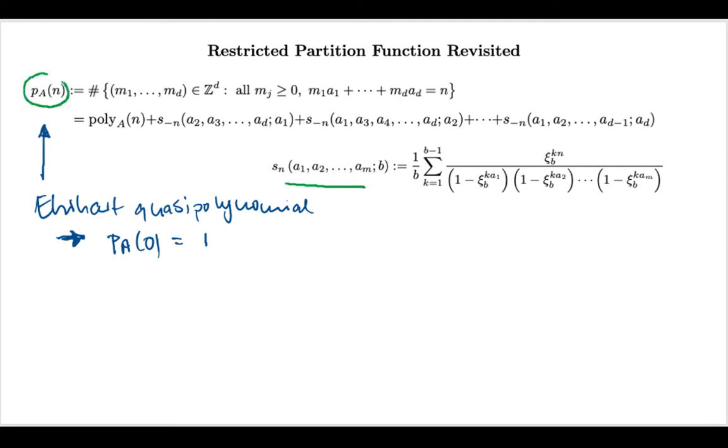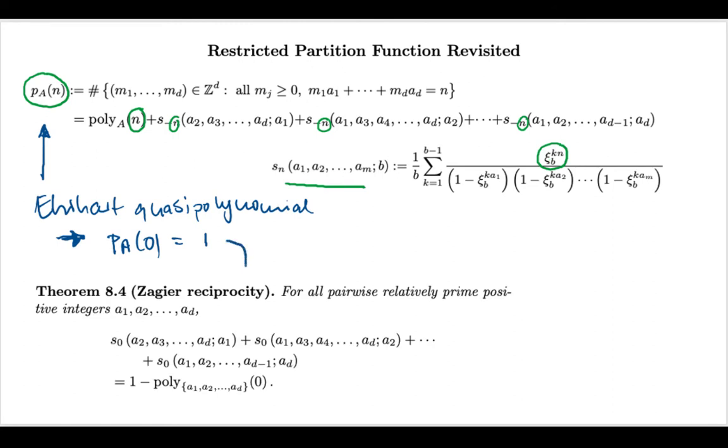that gets me a left-hand side of 1. I can plug in n equals 0 into the sort of polynomial part. That gives me some rational expression. And then if I plug in n equals 0 into these Fourier-Dedekind sums, we will get sort of a trivial numerator up here. Still, these are special cases of Fourier-Dedekind sums. And so we have a relation now from the fact that the restricted partition function has constant term 1, and this is the theorem here.